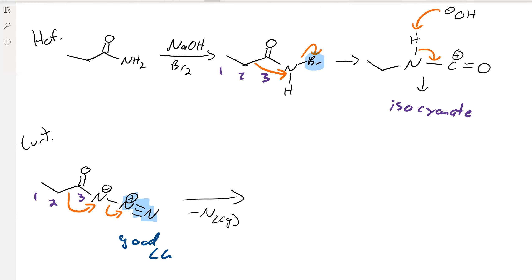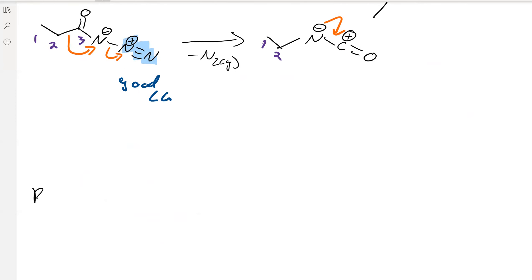So basically you're just attaching a good leaving group there. And then you think about what these carbons are - this one's number 1, this one's number 2. And then we're at a resonance structure, right? So we can just take this negative charge, make it a double bond, and you've got your isocyanate. So either way, they're just going to rearrange to the isocyanate.